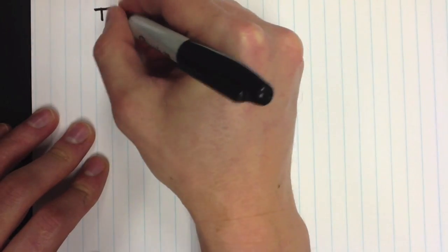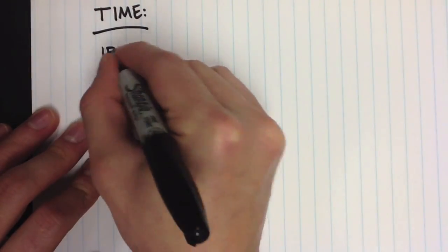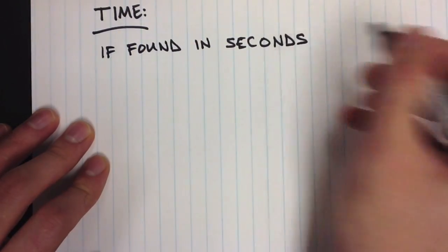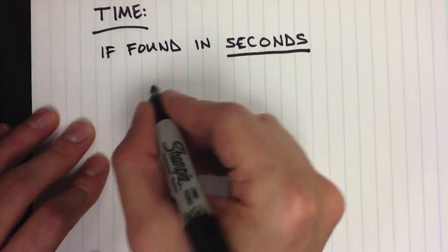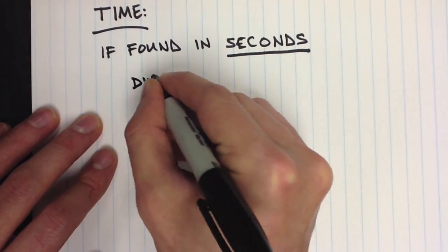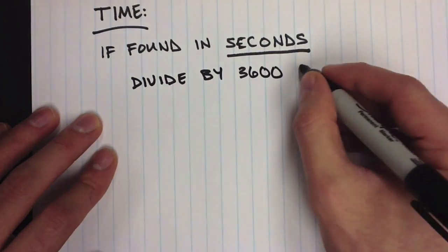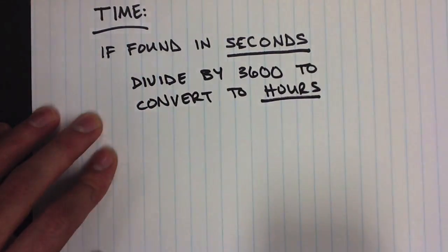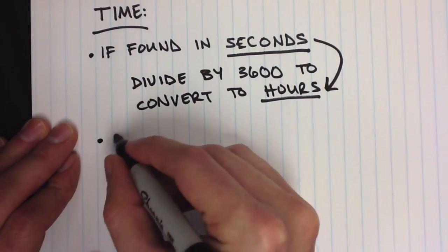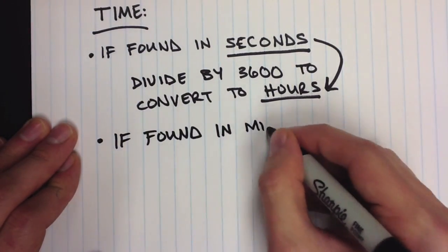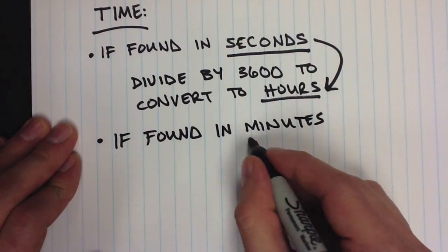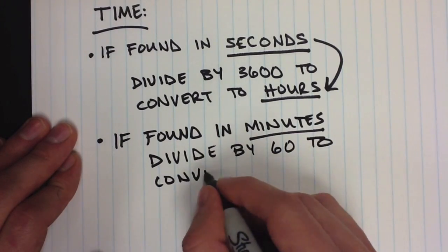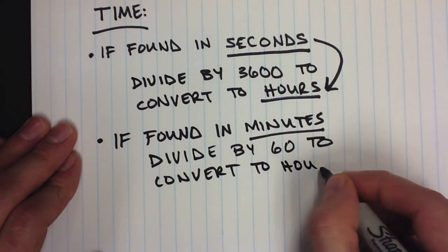There are a couple of rules to keep in mind regarding time. If you initially observe the time in seconds, you need to divide that number by 3600 to get the equivalent number of hours. If you observe the time in minutes initially, you need to divide that number by 60 to get the equivalent number of hours.